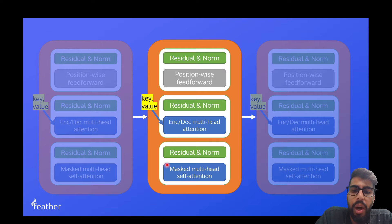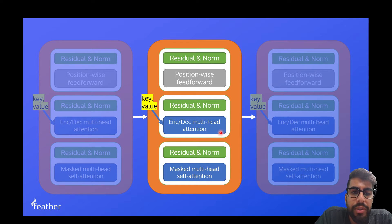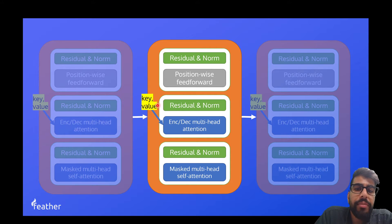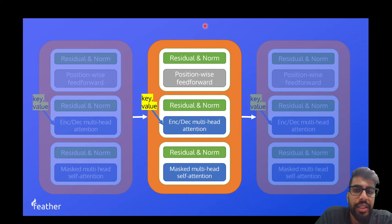The two differences are: one, this masked multi-head self-attention, which is what we'll be looking at today; and two, the encoder-decoder multi-head attention. We can see that there are some external inputs coming into this encoder-decoder multi-head attention block. What we're doing there is using the encoder and the representations of the decoder so far to try and find what words we should eventually decode.